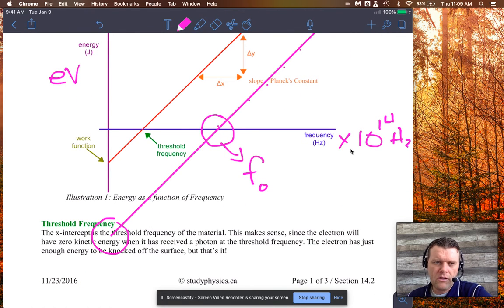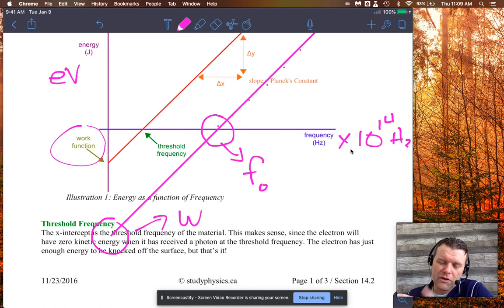So where the graph hits the Y axis, yes, it's in the negative energy area, but that is equal to the work function, which is a capital W as it says right there, work function. That's the equivalent, the negative equivalent of the work function. And you can get both of those variables just from the graph.